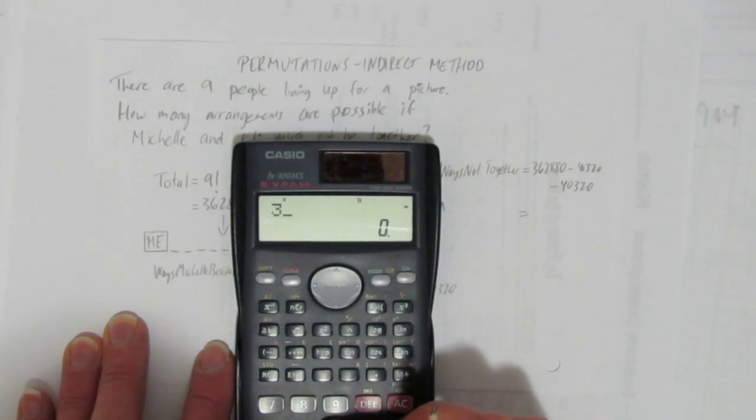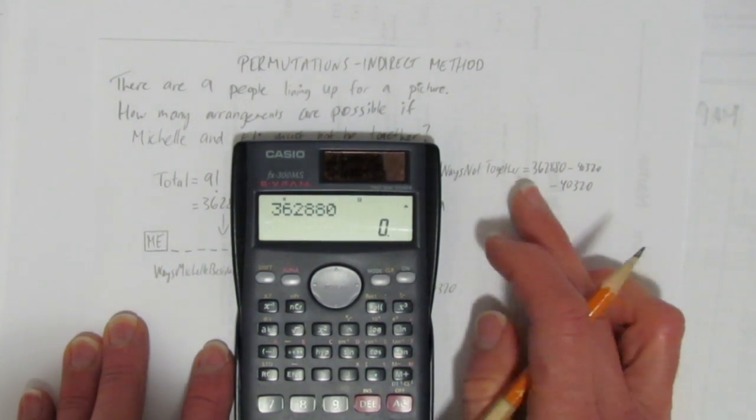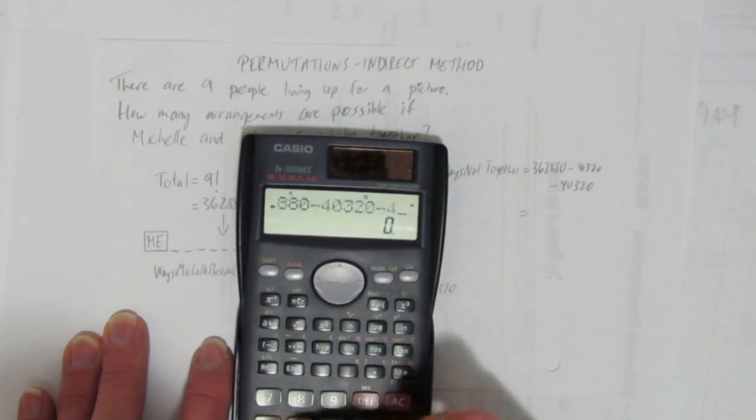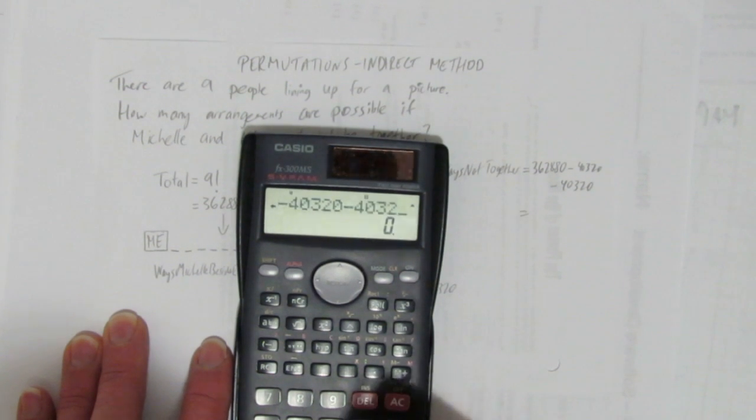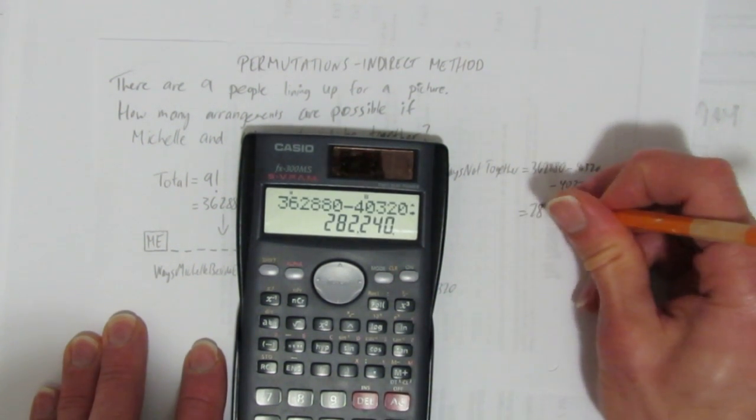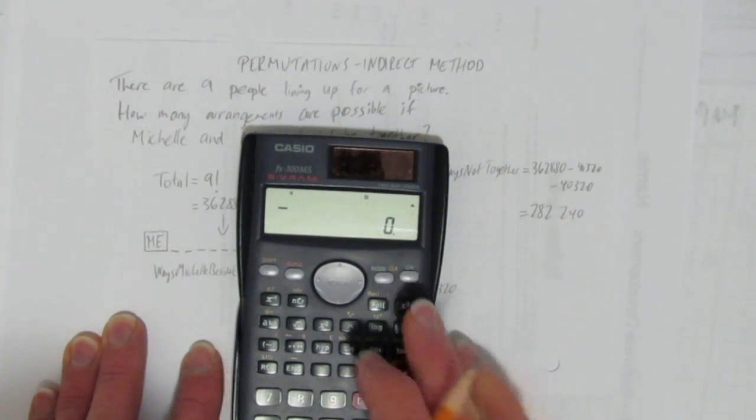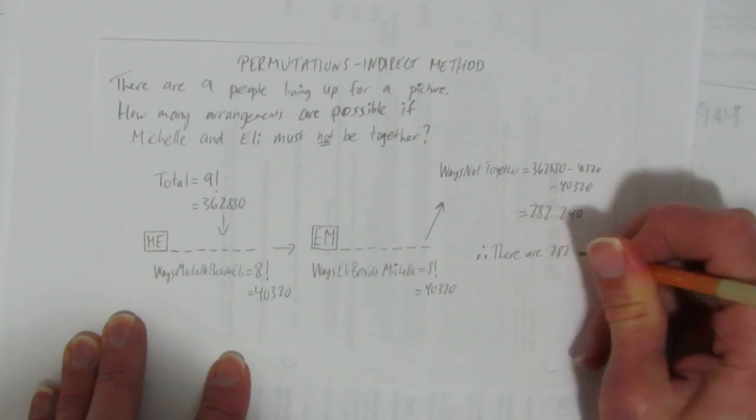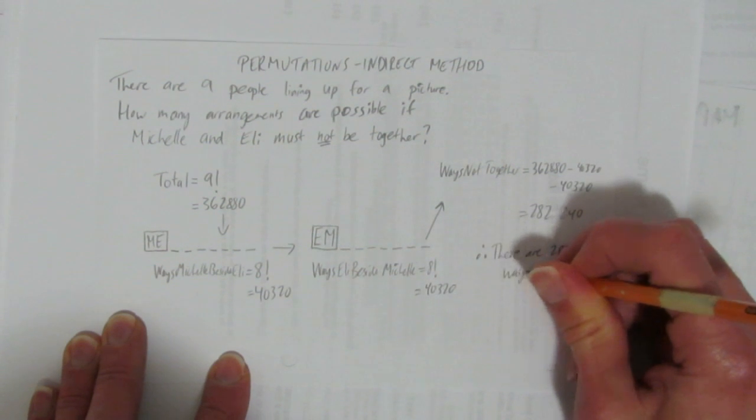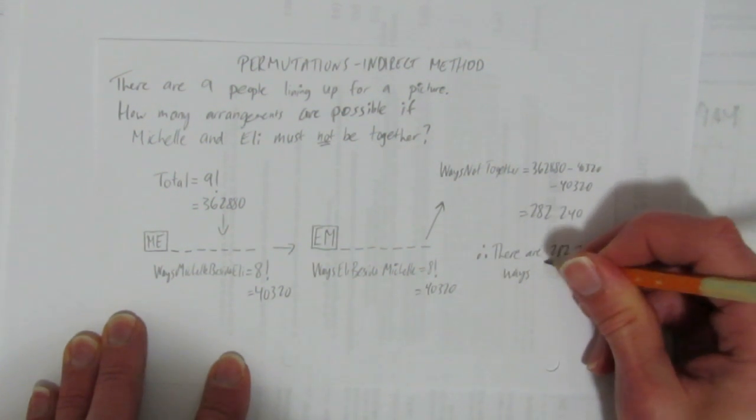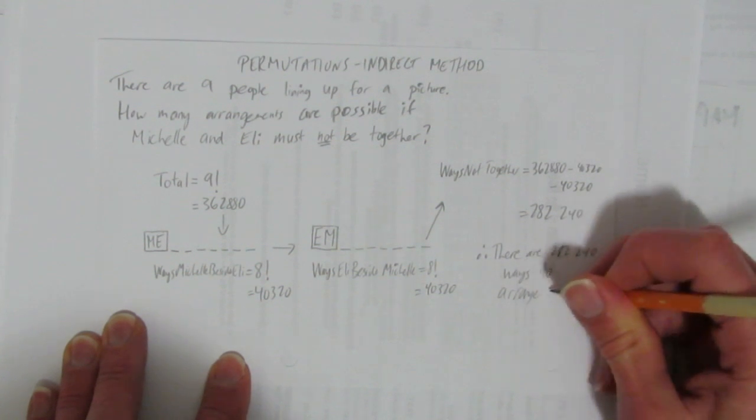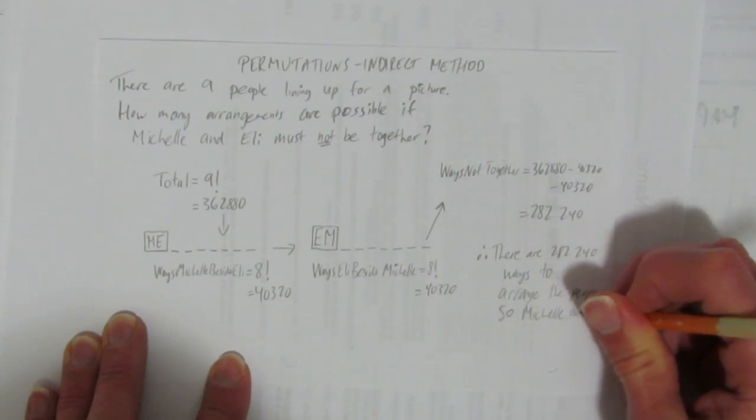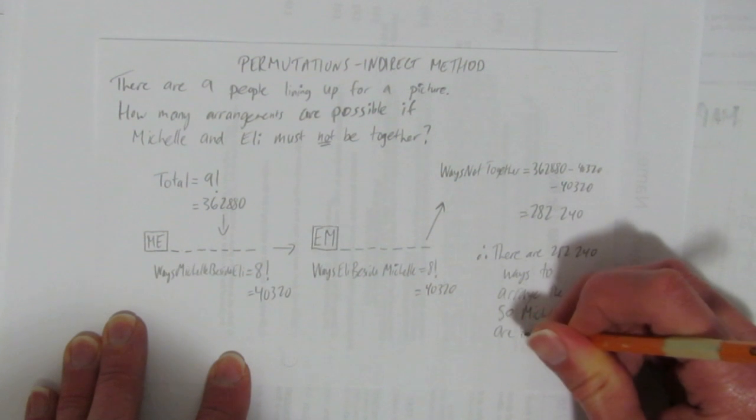And now we just calculate that. We could have even left it as factorial and probably saved some typing in the calculator here and just left this nine factorial minus eight factorial minus eight factorial. And then you avoid making typos like I almost just did. Nonetheless, we get the answer, 282,240. And so, let's write out there for a statement. There are 282,240 ways or arrangements to arrange the people.